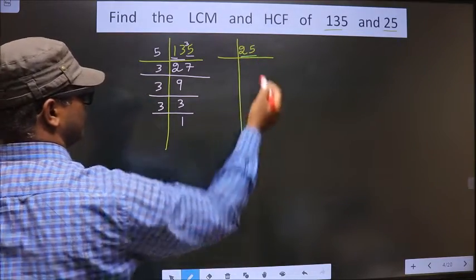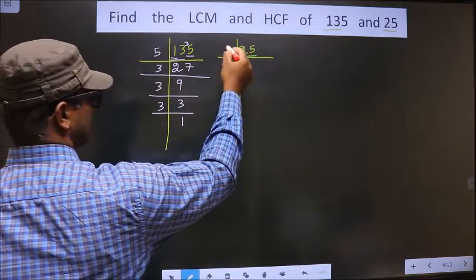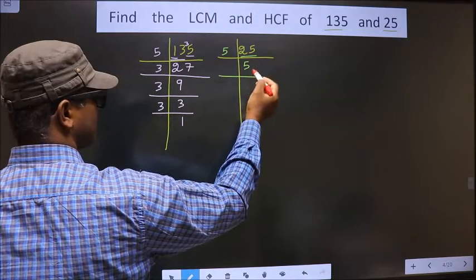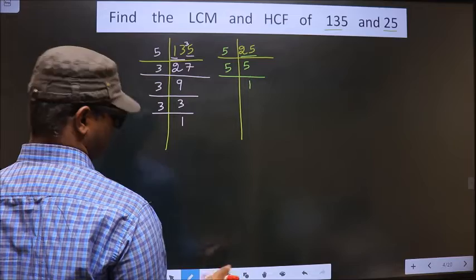Here we have 25. 25 is nothing but 5 times 5 is 25. 5 is a prime number, so we take 5 and 1.